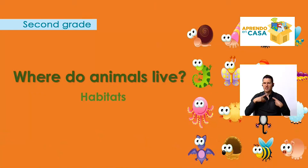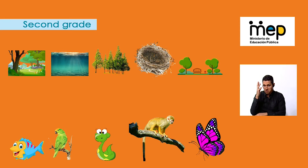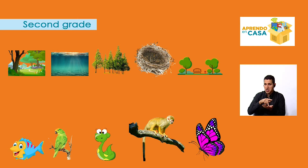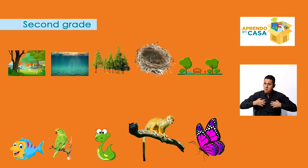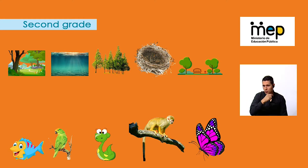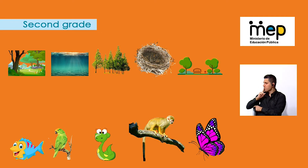Where do animals live? We have a forest, water, a tree, a nest, a park. We have a fish, a bird just like me, a snake, a monkey, and a butterfly. Now I'm going to ask you: what animal lives in the forest? Let me see — what about the snake?